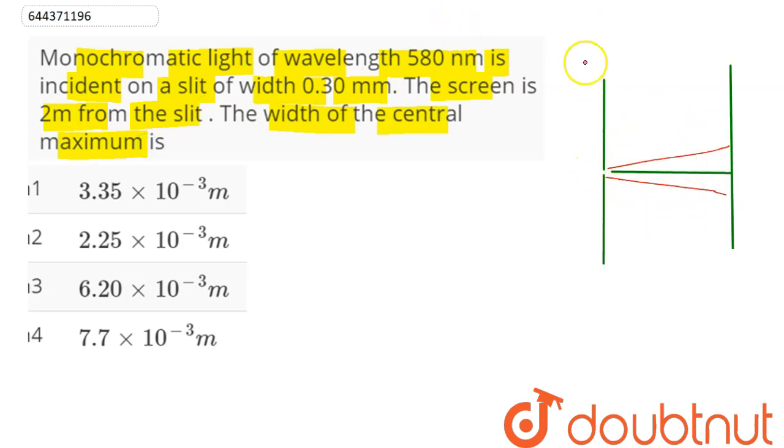Here in this case, this is single slit diffraction experiment setup with width of this slit given as A which is equal to 0.3 mm and wavelength is given as lambda 580 nanometer.